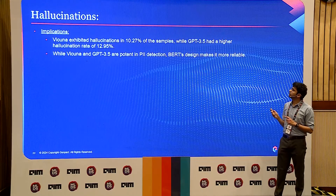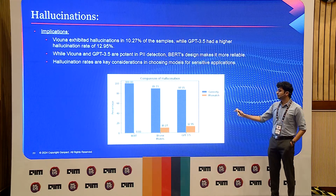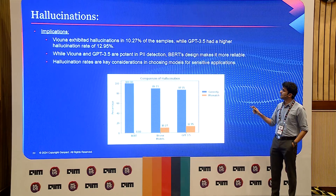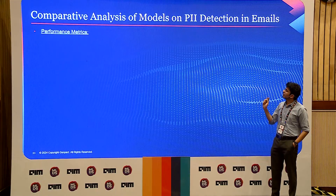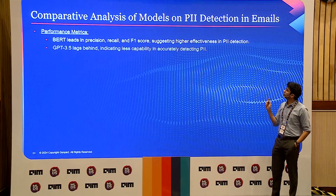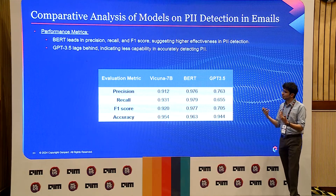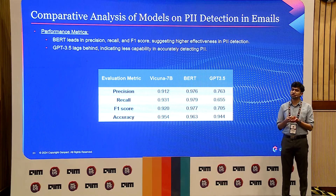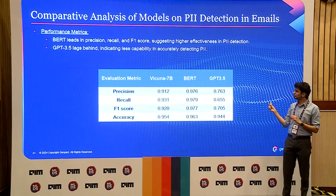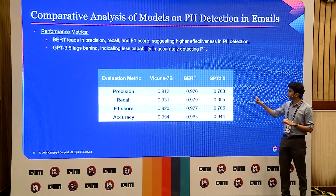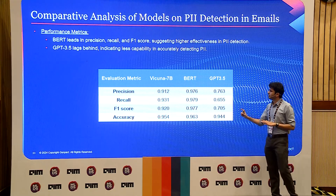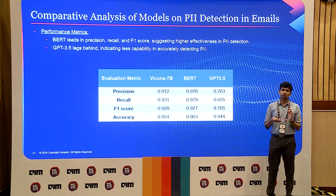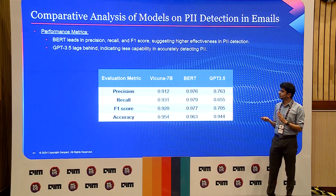These are the overall results for hallucinations — Vicuna still hallucinated slightly less than GPT-3.5, which was the highest in terms of hallucination. Moving on to the performance matrix and final scores: BERT did overall the best. Don't focus on accuracy here because we have a lot of 'outside' categories as well — focus on the F1 score. GPT-3.5 did quite well, and Vicuna 7B did quite better than GPT-3.5. So your open-source fine-tuned LLM did quite better than GPT-3.5 — that's a great insight.